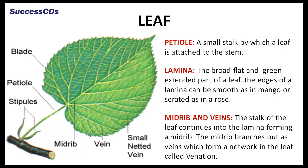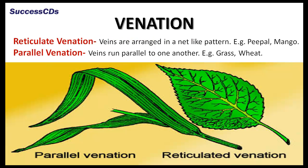A leaf consists of two main parts: the petiole and the leaf blade. The petiole is a small stalk by which a leaf is attached to the stem. The broad, flat and green extended part of a leaf is called the lamina. The edges of a lamina can be smooth as in mango, or serrated as in rose. The stalk of the leaf continues into the lamina forming a midrib, which branches out as veins forming a network called venation. Venation can be reticulate, where veins are arranged in a net-like pattern as in mango, or it can be parallel, where veins run parallel to one another as in grass and wheat.